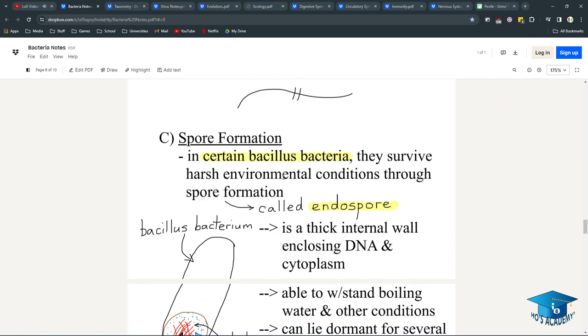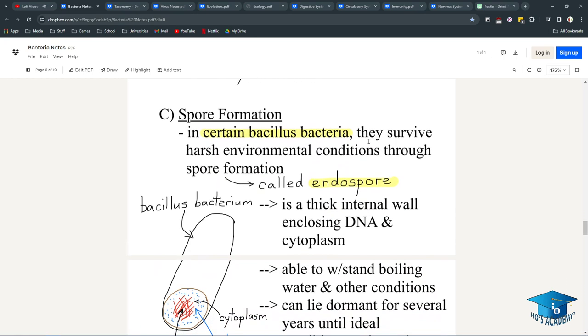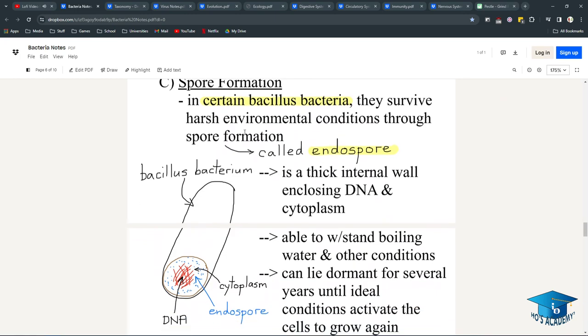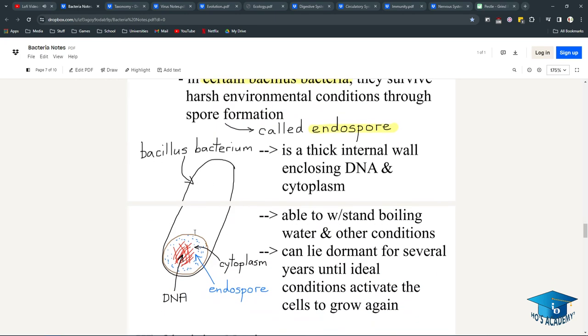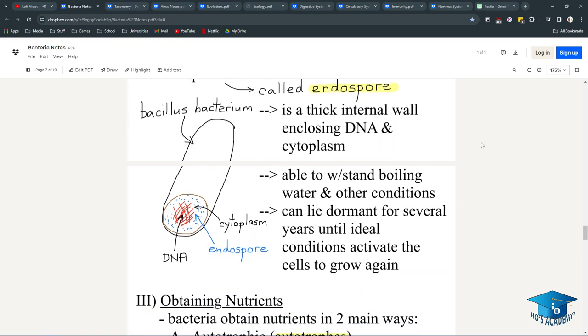Spore formation: In certain bacillus bacteria, they survive harsh environmental conditions through spore formation called an endospore. It looks like a taco, sushi, burrito thing. There is a thick internal wall enclosing the DNA and cytoplasm, and it's able to withstand boiling water and other conditions and can lay dormant for several years until ideal conditions return.